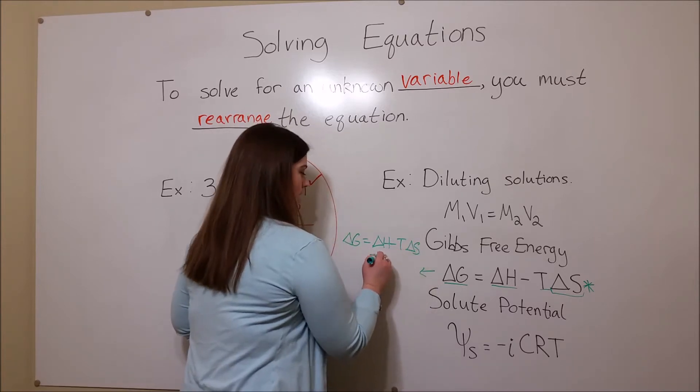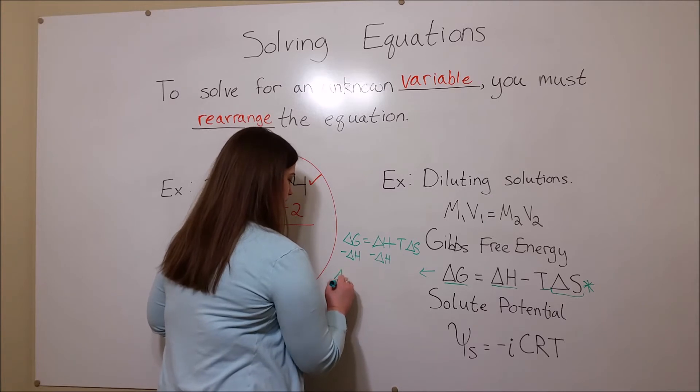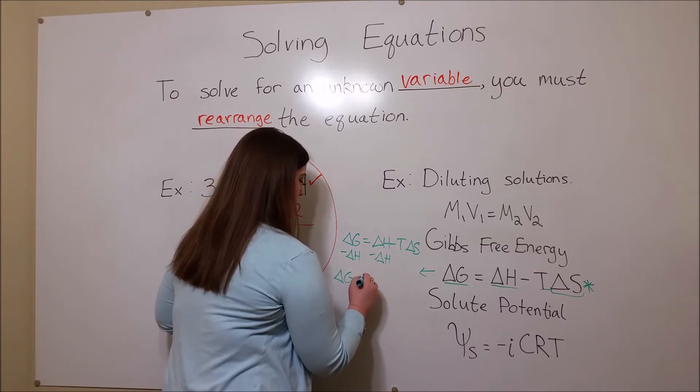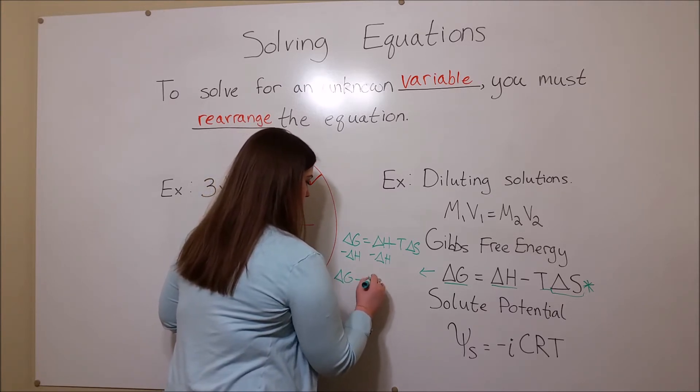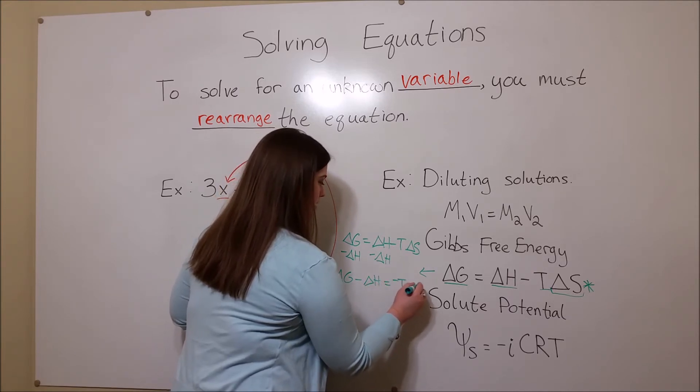First, we would subtract delta H from each side. This gives us delta G minus delta H equals negative T delta S,